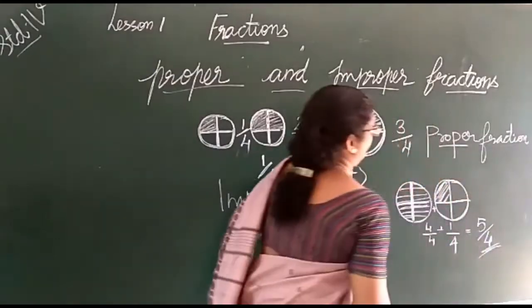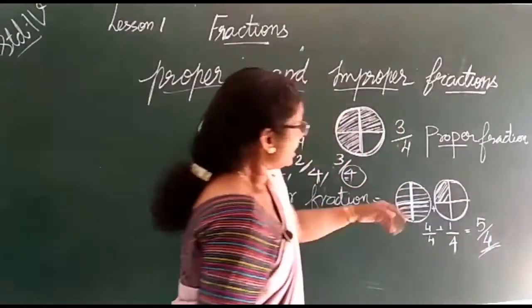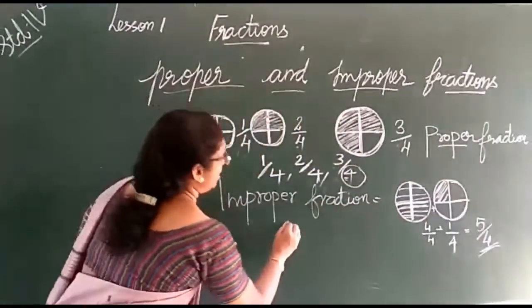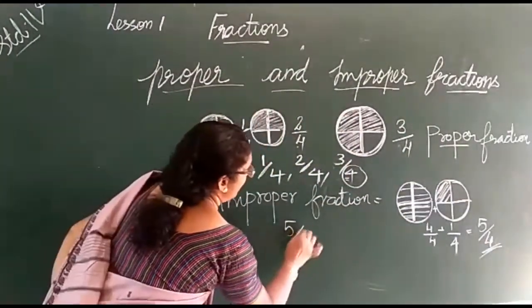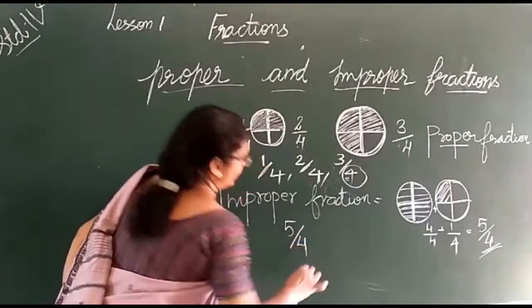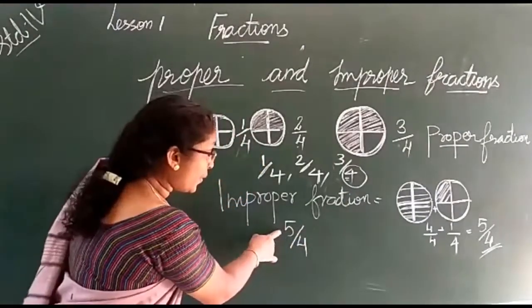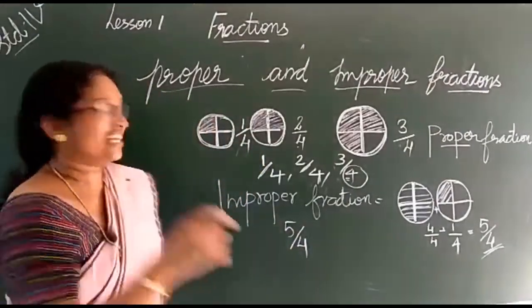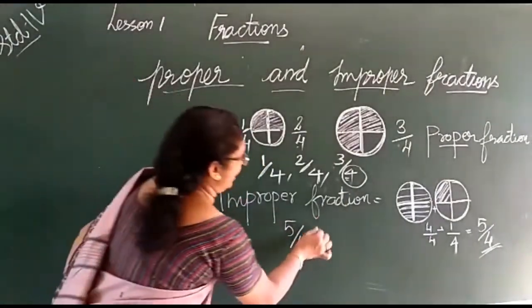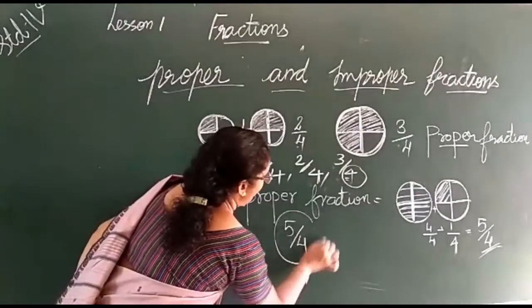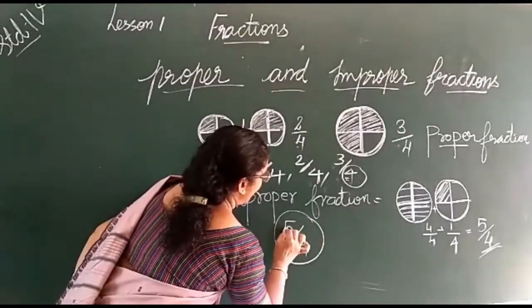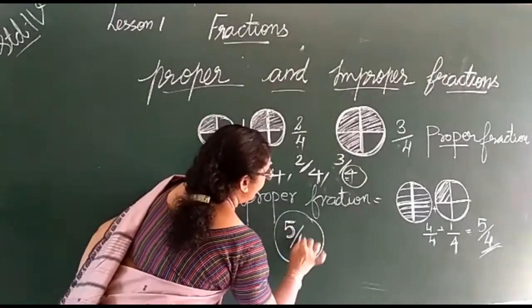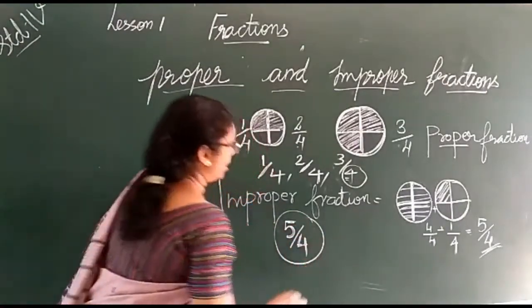This is equal to 5 by 4. In this fraction — 5 by 4 — the numerator is greater than the denominator. Numerator is greater than the denominator.